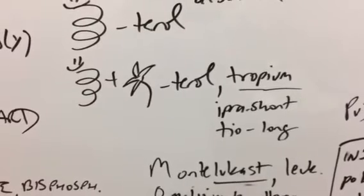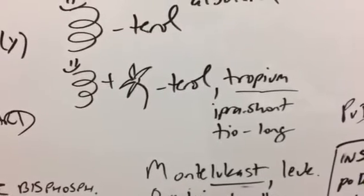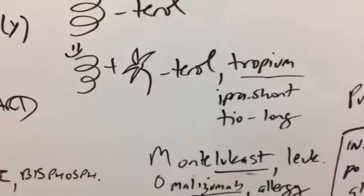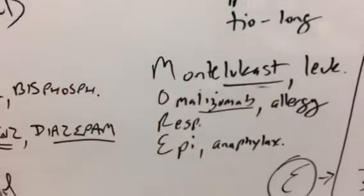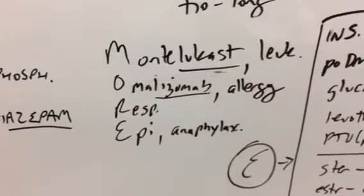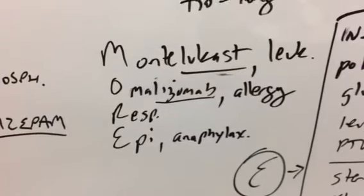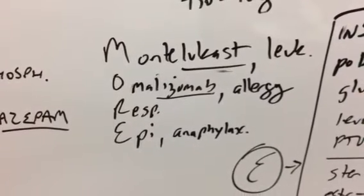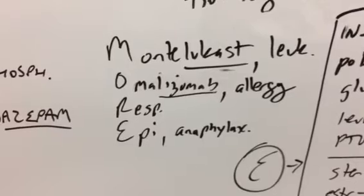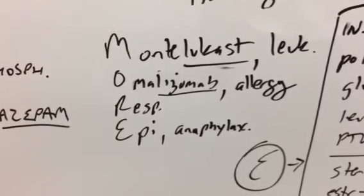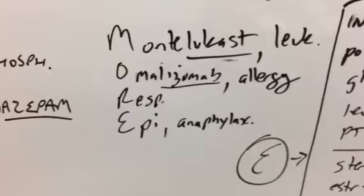And then when you have the bronchoconstriction, you can also use the terol, albuterol with the ipratropium. So I put a little tropical tree there. So ipratropium, and remember tiotropium is the long-acting one. And then there's a couple more respiratory drugs. So montelukast. Lukast is a leukotriene inhibitor. Omalizumab for allergy. And then epi for anaphylaxis.